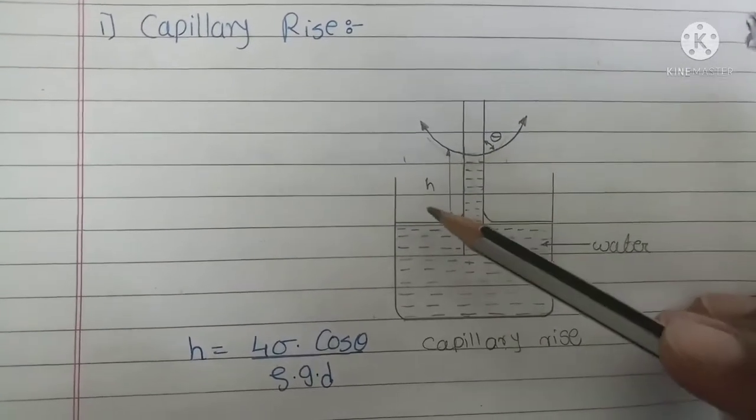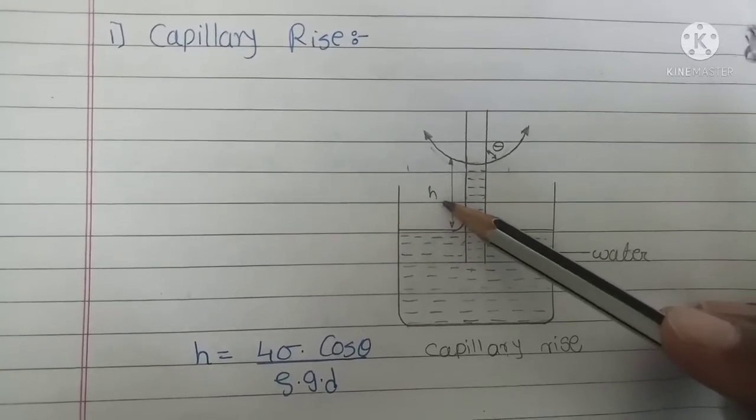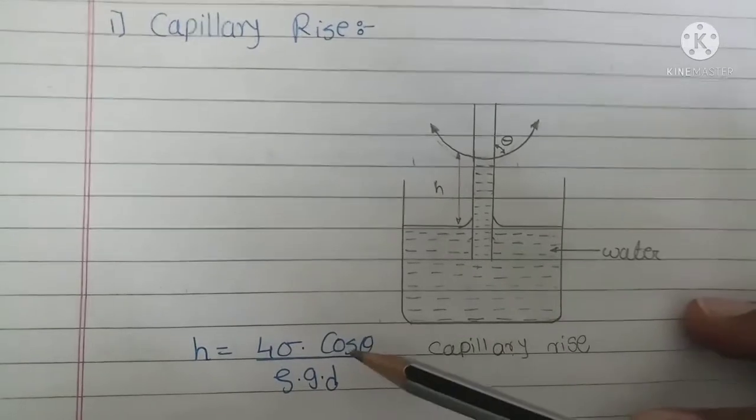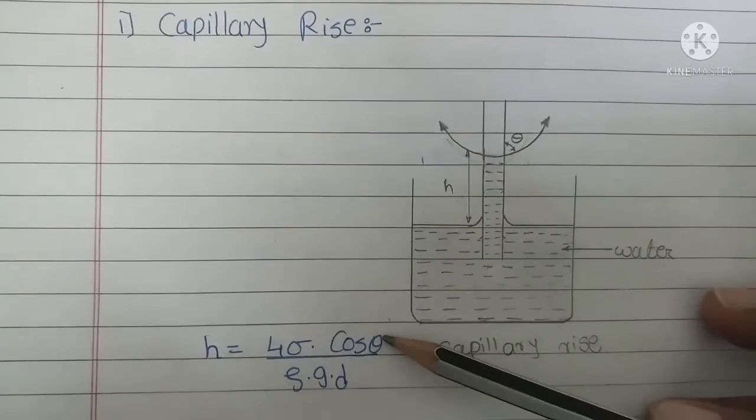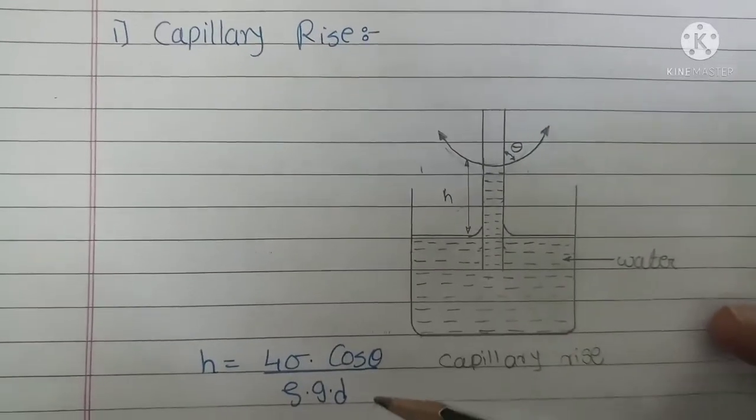H means the capillary rise. It is given by the formula: h equals 4 sigma cos theta divided by rho times g times d.